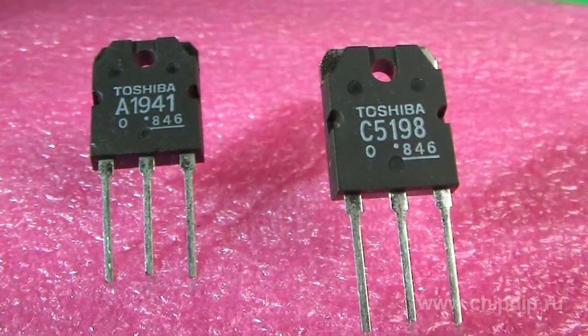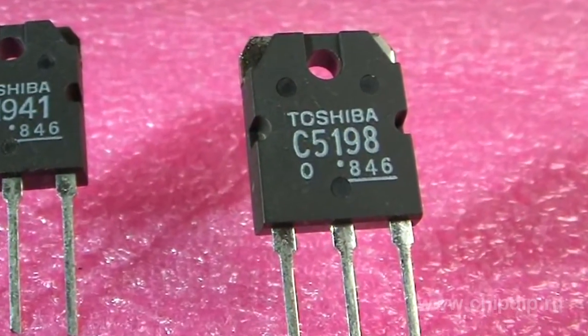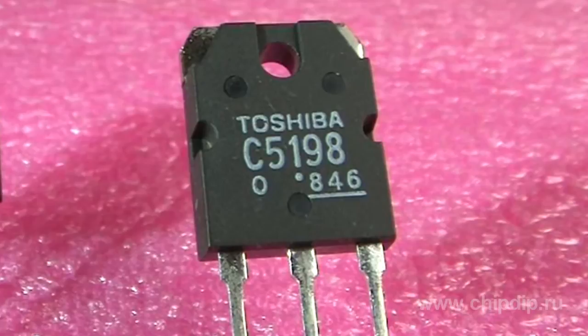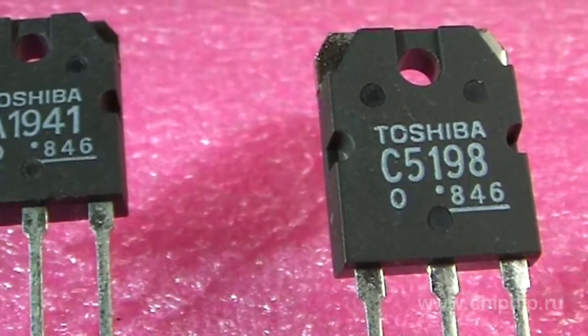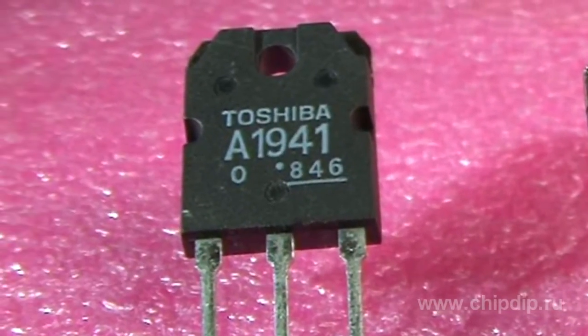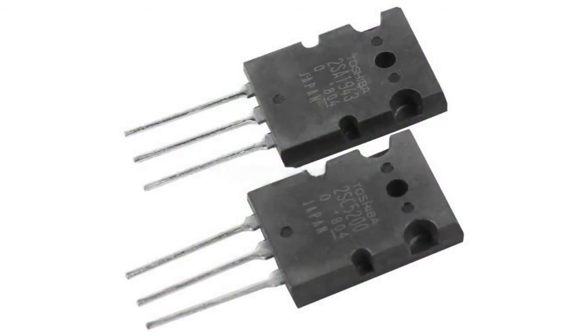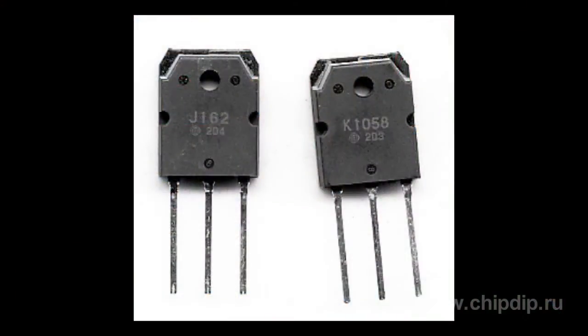For example, Toshiba manufactures complementary bipolar transistor pairs including 2SC5198 and 2SA1911, or 2SA1941 and 2SC5200. Such unipower transistor pairs include 2SJ162 and 2SK1058 from Hitachi.